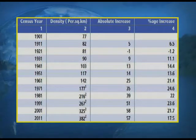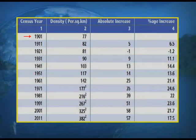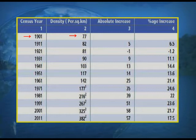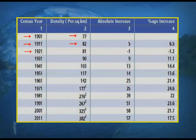Looking at the screen, you can view the table showing the density of population in different census years, starting from 1901. As we saw in the previous lecture, we started with regular census from 1901 onwards. In 1901, the density of population was 77 persons per square kilometer. In 1911, it rose to 82. Then in 1921, the year known as the year of demographic divide, there was a fall in population, and so the density also fell by one person — from 82 to 81 persons per square kilometer.